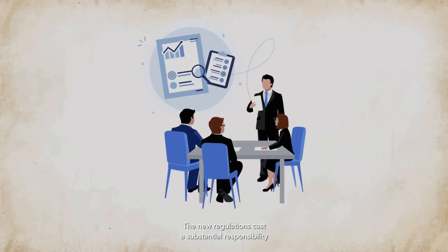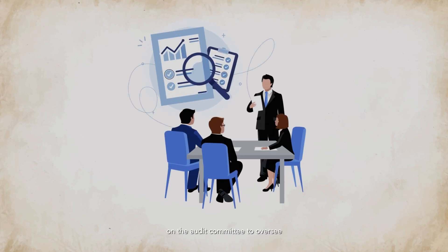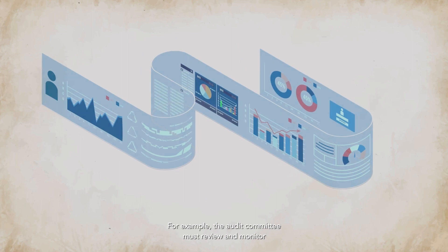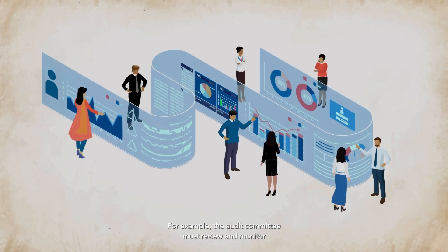An important committee of the board is the Audit Committee. The new regulations cast a substantial responsibility on the Audit Committee to oversee the entire financial reporting system and to review the end product of that financial reporting system, that is the financial statements. For example, the Audit Committee must review and monitor the auditor's independence and performance. And considering that audit committees meet four to six to eight times a year at most, the question is, how do they do that?